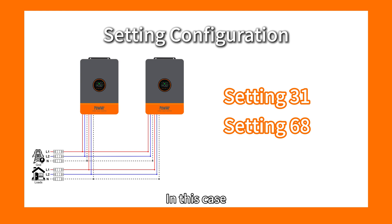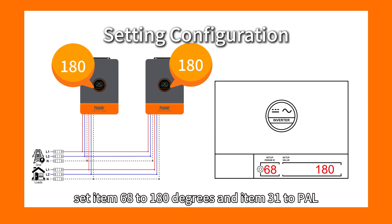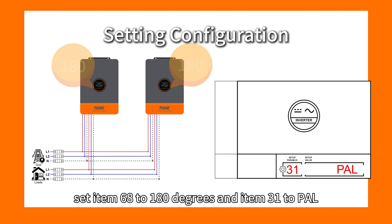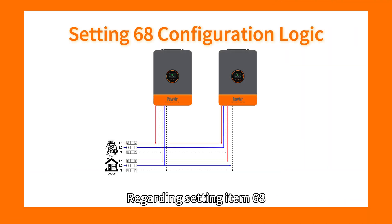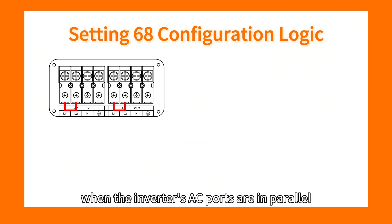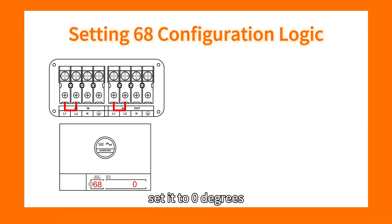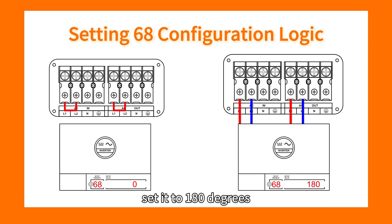In this case, settings 68 and 31 must be configured accordingly: set item 68 to 180 degrees and item 31 to PAL. Regarding setting item 68, when the inverter's AC ports are in parallel, set it to 0 degrees; when they are not in parallel, set it to 180 degrees.